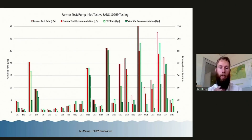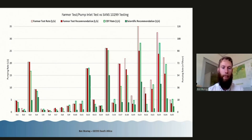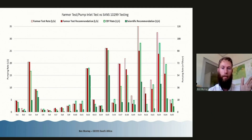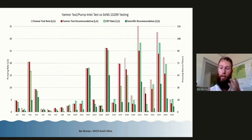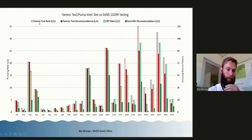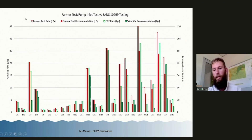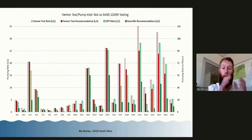Shown graphically, on the primary vertical scale we have rates in liters per second. What's being compared are bars of the pharma test pumping rate, the pharma test recommended rate in solid red, compared to the constant discharge test rate and the scientifically recommended long-term production rate. The right-hand axis is in cubic meters per hour. We've got quite a range in yields — from a fraction of a liter per second up to about 30-odd liters per second, or from a couple of cubic meters per hour up to about 100. This mis-recommendation occurs across a variety of rates.